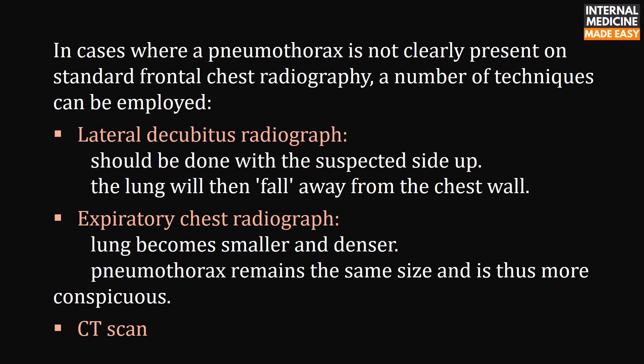In cases where a pneumothorax is not clearly present on standard frontal chest radiography, a number of techniques can be employed: a lateral decubitus radiograph should be done with the suspected side up so the lung falls away from the chest wall; an expiratory chest radiograph, where the lung becomes smaller and denser while the pneumothorax remains the same size and is thus more conspicuous; and CT scan.